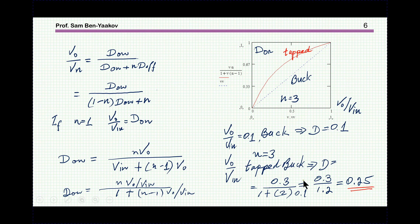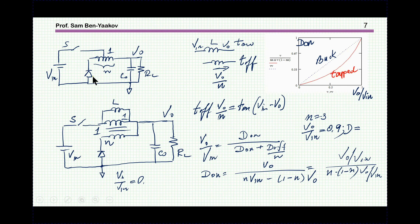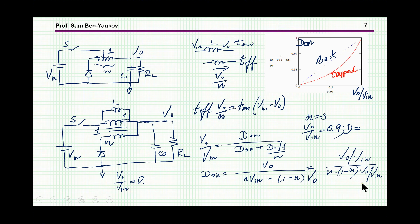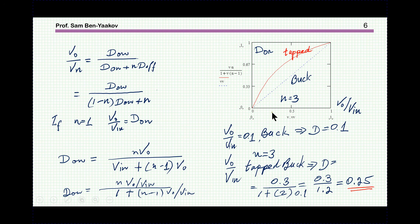There is another way to tap the buck converter — by putting the diode at its original point but connecting the switch at a tapped point. Again defining it as N-to-1 and showing it as a two-winding transformer, and computing the average voltage on the inductor during on and off times, I get an expression for D_on as a function of the voltage transfer ratio. In this case it goes the other way: for a given transfer ratio we get a lower duty cycle instead of a higher one.